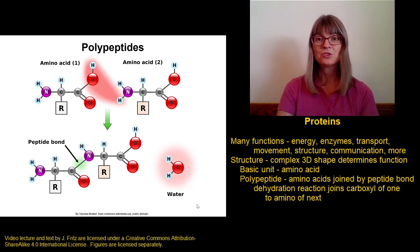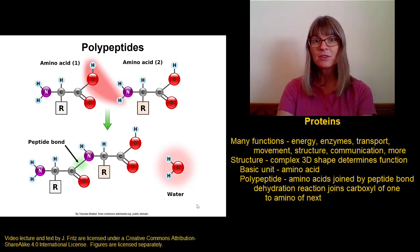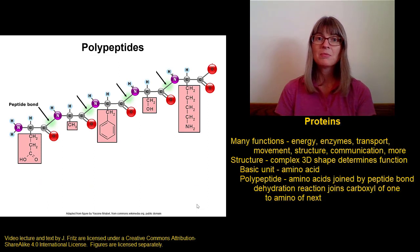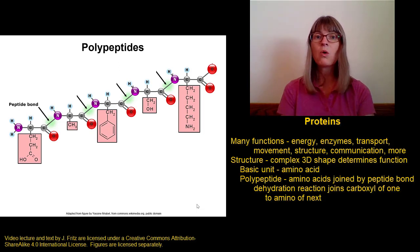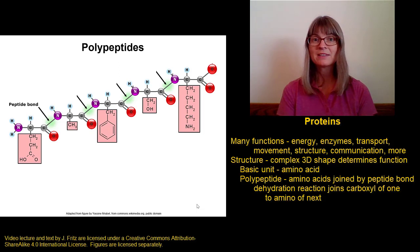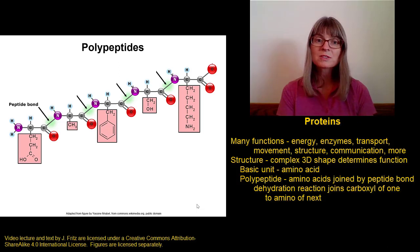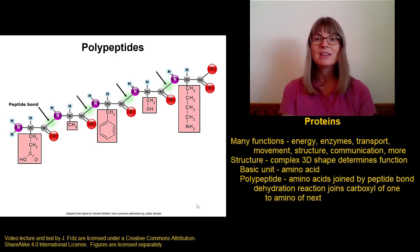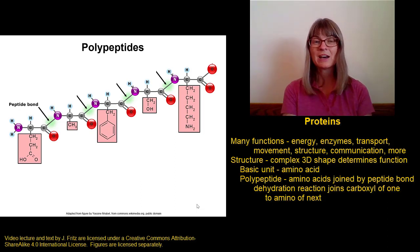We can then do another dehydration reaction between the carboxyl group of the second amino acid and an amino group of another amino acid. We can continue stringing amino acids together between the carboxyl end of one and the amino end of the next until we make a whole chain of amino acids. A chain of amino acids is called a polypeptide. We've got our chain of amino acids hooked together from carboxyl to amino, and the R groups are just hanging off to the side at this point — they're not doing anything yet, just hanging off the polypeptide chain.